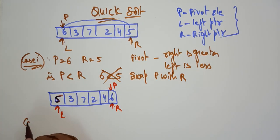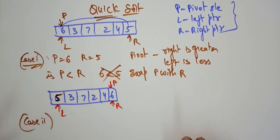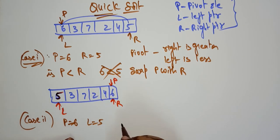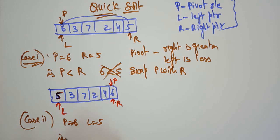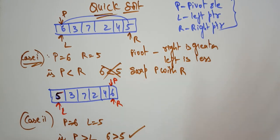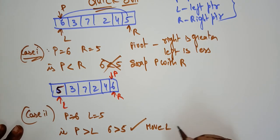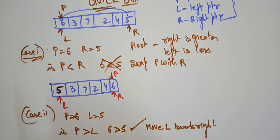Now check Case 2. The pivot element is still 6. Check with the left side — L is 5. The condition is: pivot should be greater than L. Is 6 greater than 5? Yes. So no need to swap. When the condition is satisfied, move the L pointer one step to the right.